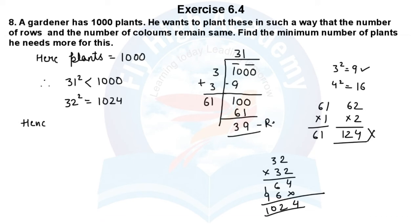Hence, number to be added. 1024 minus 1000. So 1024 minus 1000, I will get 24.